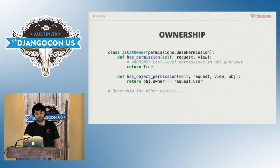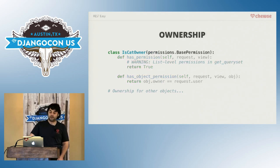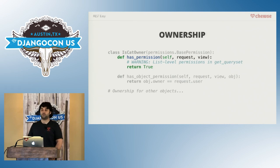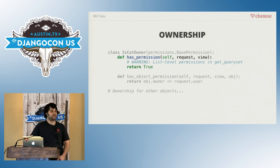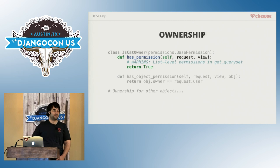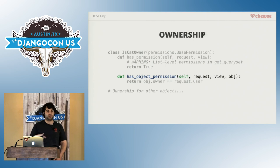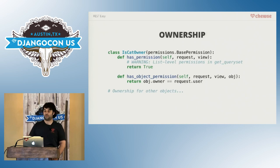You're going to do the same thing for ownership — are you the owner of this cat? There's a little caveat here: the way Django REST framework is set up, it's really hard to do this check in hasPermission the way you'd want. For list-level permissions — getting a bunch of cats, for example — you really end up having to implement that in the get_queryset method on the viewset, which is one of the things we'll talk about making better in the future. But then you have has_object_permission, where you can define whether a user has permission to touch a specific object — is the request user the owner of this cat object?